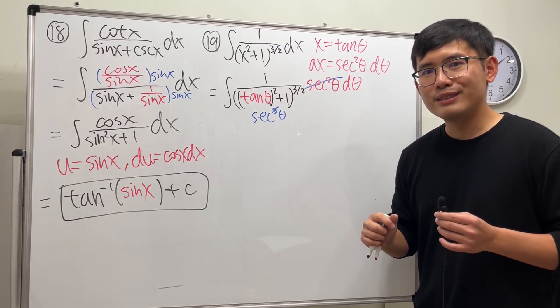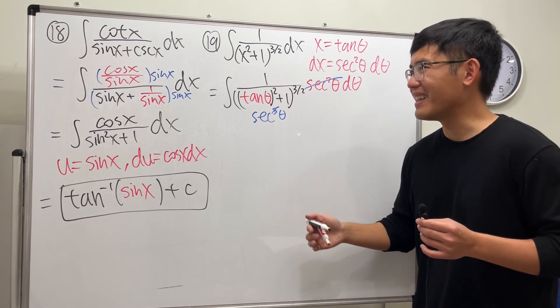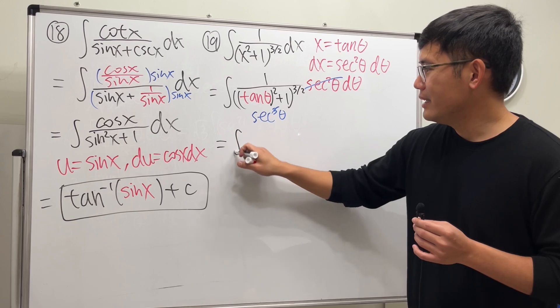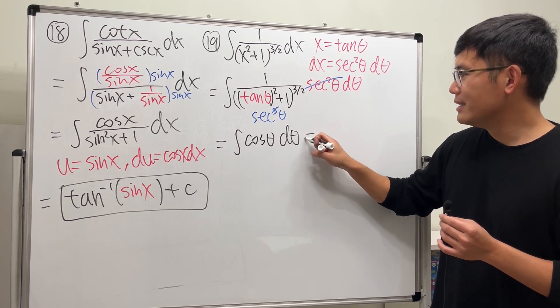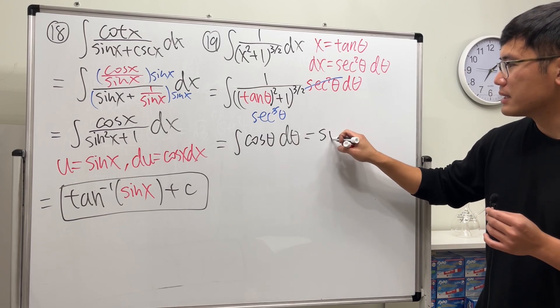1 over secant theta is just very nicely equal to cosine theta. So integrating cosine theta in the theta world, guess what, this is just going to be positive sine theta.